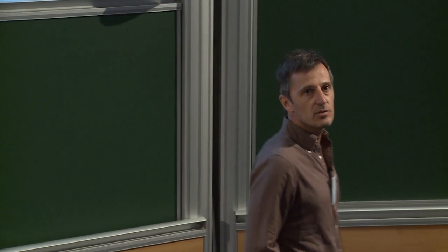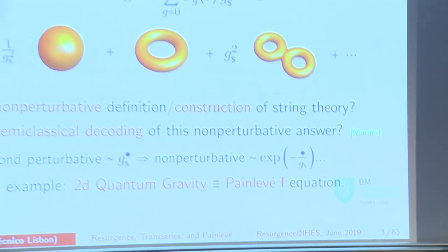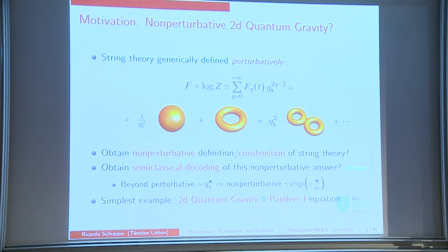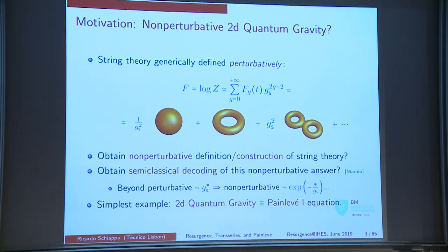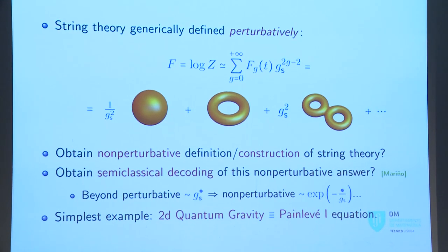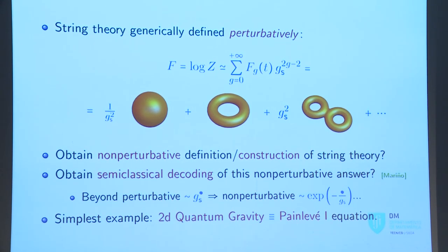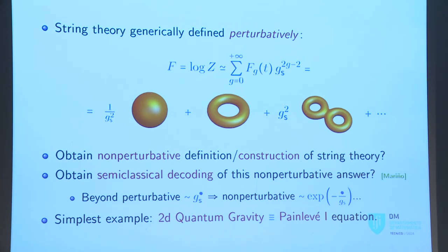So a little bit of motivation. If you come from the physics side, this could be something that interests you: how can I compute non-perturbative quantum gravity? That's a very hard question. String theory tries to address that and it does so generically perturbatively. So that's sort of the free energy of some string theory, which is this famous sum over a Riemann surface of different genera. That theory is asymptotic, so we would like to go beyond it and find a non-perturbative construction of string theory.